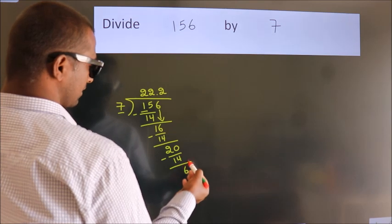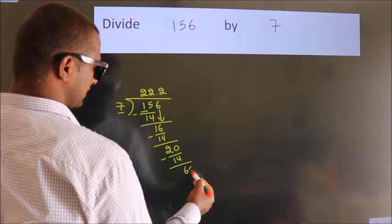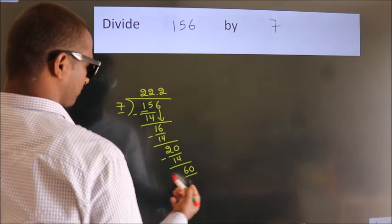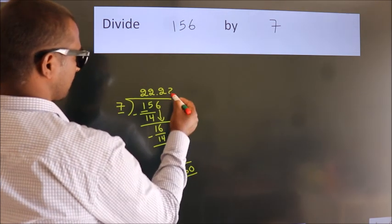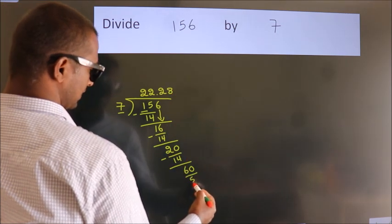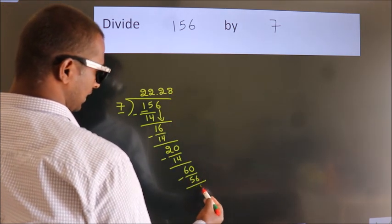After this, we already have the decimal, so directly take 0. So 60. A number close to 60 in the 7 table is 7 twos, 56. Now we subtract. We get 4.